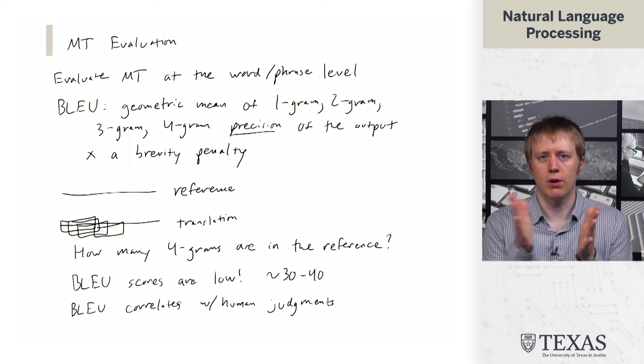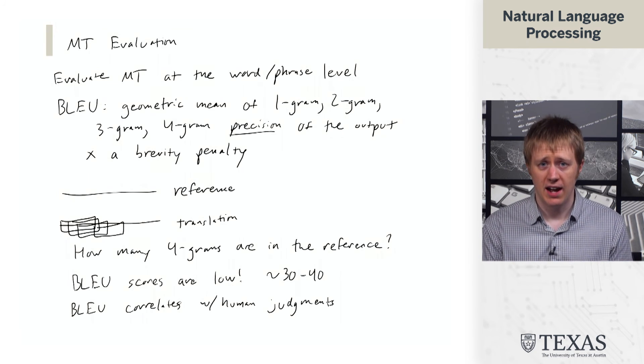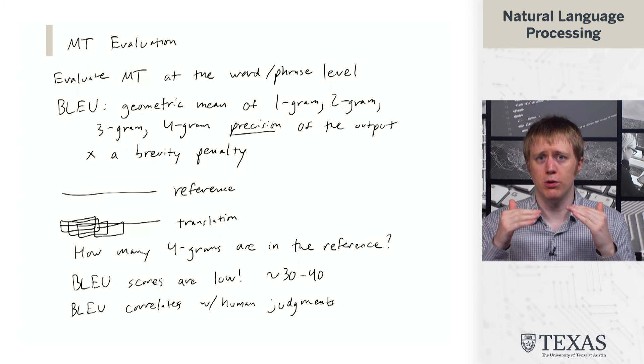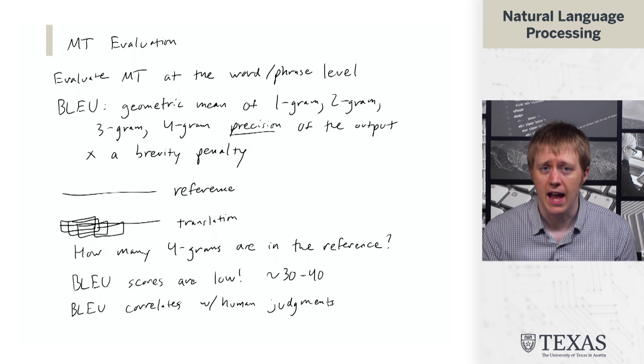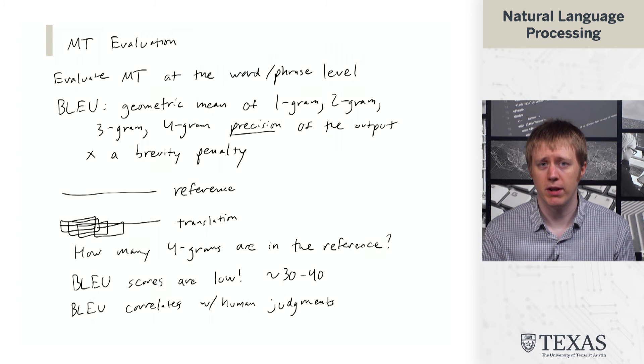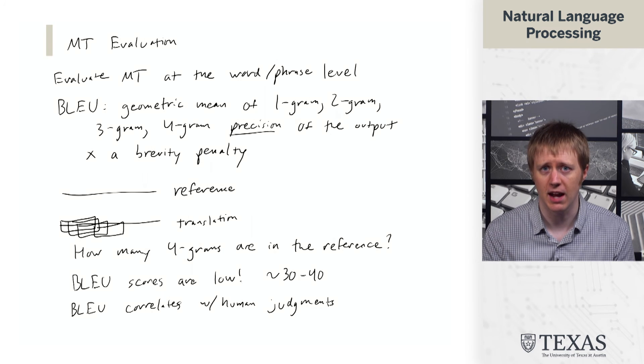We can't look at a BLEU score of 30 and say this is somehow 30% correct. Instead, it's something where we know that BLEU of 33 is probably quite a bit better than BLEU of 30. And when developing a system on a single language, we can use this as our benchmark for understanding how well we're doing.